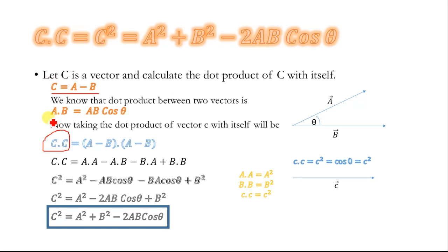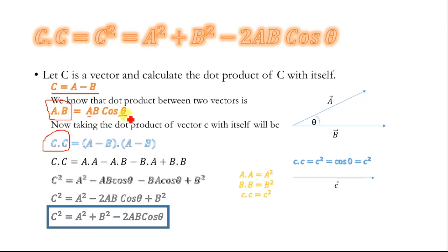We know that the dot product between two vectors, a dot b, is equal to ab cos θ, where a is the magnitude of vector a, b is the magnitude of vector b, and θ is the angle between vector a and vector b.